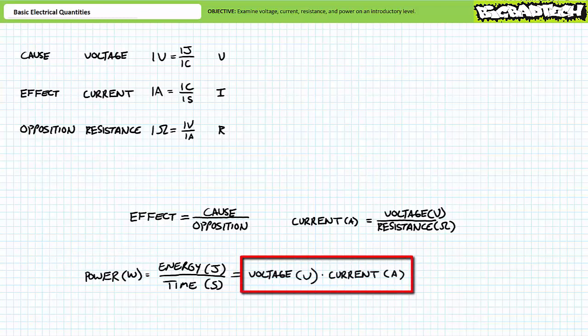Electrical power is also the product of voltage across something times the current through something. Power in units of watts equals voltage in units of volts times current in units of amps.